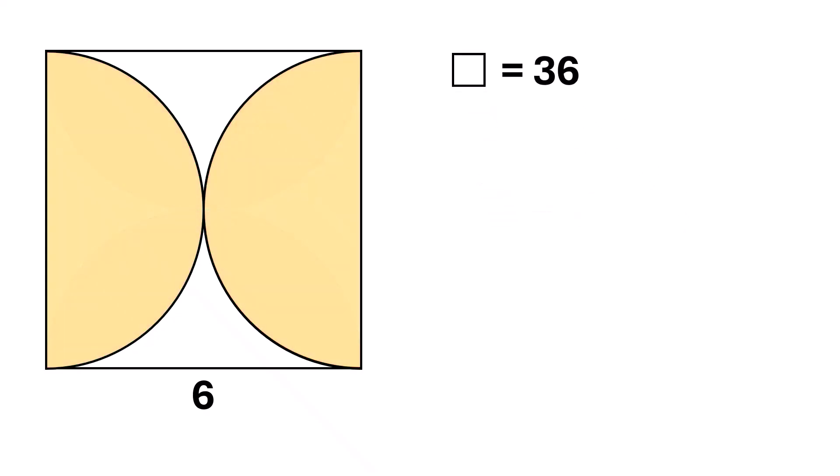Now, let's focus on these two half circles. Together, they form a full circle. Since each side of the square is six units, the diameter of each semicircle is also six, making the radius three units.